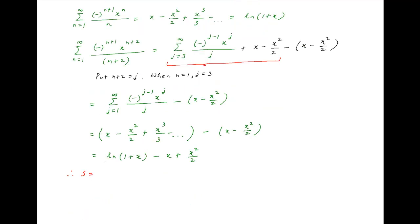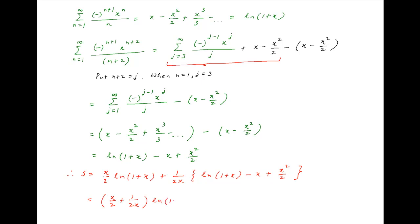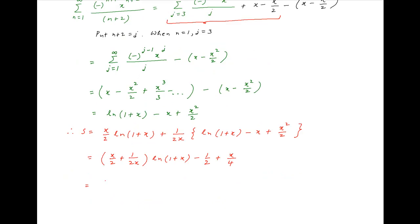Using the above results, S is equal to x upon 2 times ln of 1 plus x, plus 1 upon 2x times, in brackets, ln of 1 plus x minus x plus x squared upon 2. This simplifies to, in brackets, x upon 2 plus 1 upon 2x, multiplied by ln of 1 plus x, minus half plus x upon 4. This equals x squared plus 1 upon 2x times ln of 1 plus x, minus half plus x upon 4, and this is the required answer.